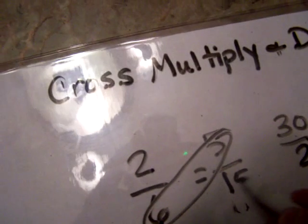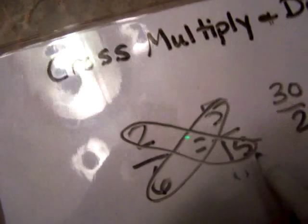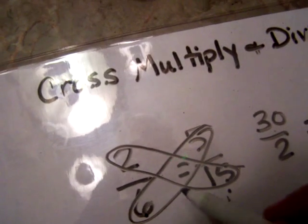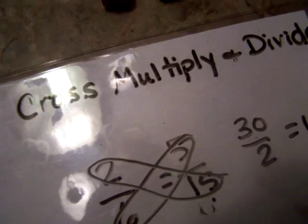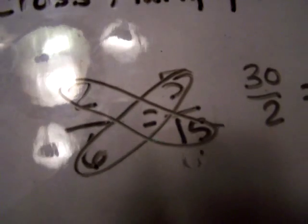And when you do it, they should equal each other. Fifteen times two is thirty, and six times five is thirty. Thirty equals thirty. So your butterfly wings match on both sides.